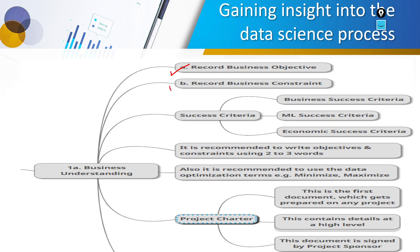What is the meaning of business objective? Suppose I am working on a financial project. The bank must understand whether to approve a loan for a customer or not. My problem statement is: I want to approve the loan — yes or no. This is the problem statement, and based on this we can record our business objective. The objective is to decide loan approval based on the customer's previous financial status.